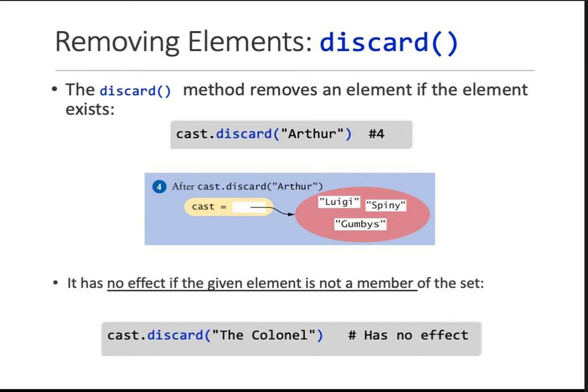Then discard is if you want to discard a specific member from a given set. So there are two methods given in Python. One is discard, the other is remove. So discard is that it will try to remove an element. Whether that element exists in the set or it does not. For instance, Arthur was in the set, so discard worked and it just removed. If you write cast.discard the colonel, this has no effect because the colonel is not a member of this set. Now, what should ideally happen is some kind of exception should be raised. Some kind of error should be given to the programmer or the user that, hey, you're trying to delete some element that does not exist in the set, right?